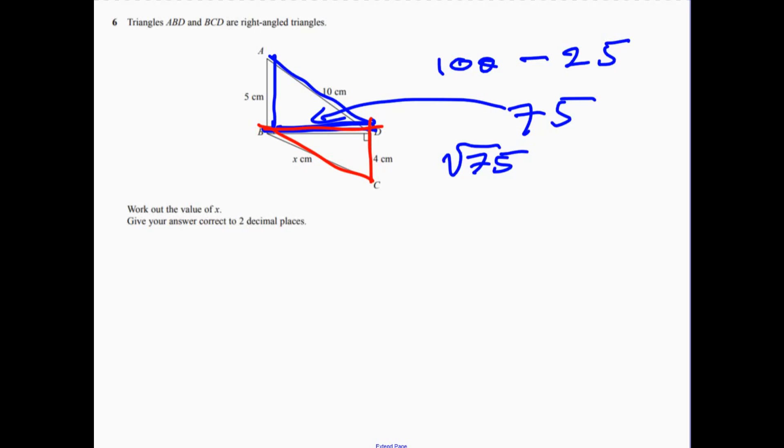So it'd be 75 squared. Notice it didn't actually square root 75, because there was no point, because I'm only going to square it again in a second. So this length here would be the square root of, so root 75 squared plus 4 squared, which is 16. So if I add those two together,